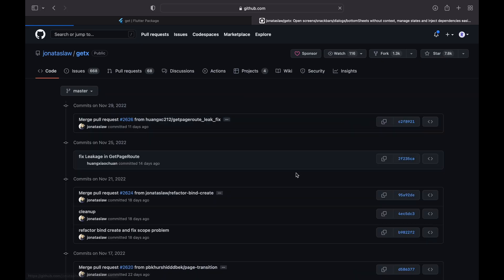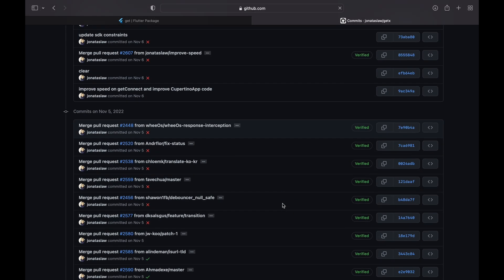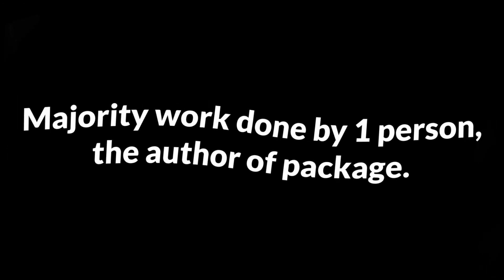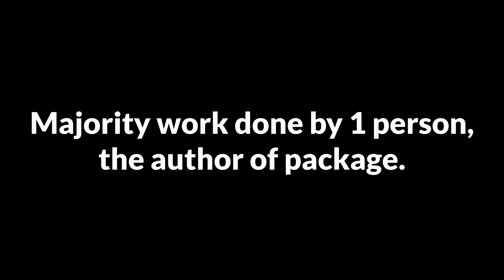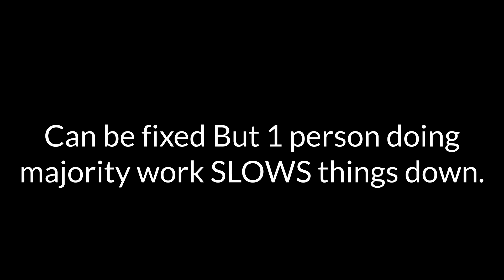This is probably why most commits to the GetX package are by the author himself — not a good sign, because bringing new changes gets slower when the majority of work is done by just one person. The situation is more serious when combined with the points already discussed: this package has many features and replaces many Flutter components. Every time properties are added or deleted by the Flutter team, there's a possibility of GetX either breaking code or not being compatible with the current Flutter version, and only one person fixing it slows down the process significantly.